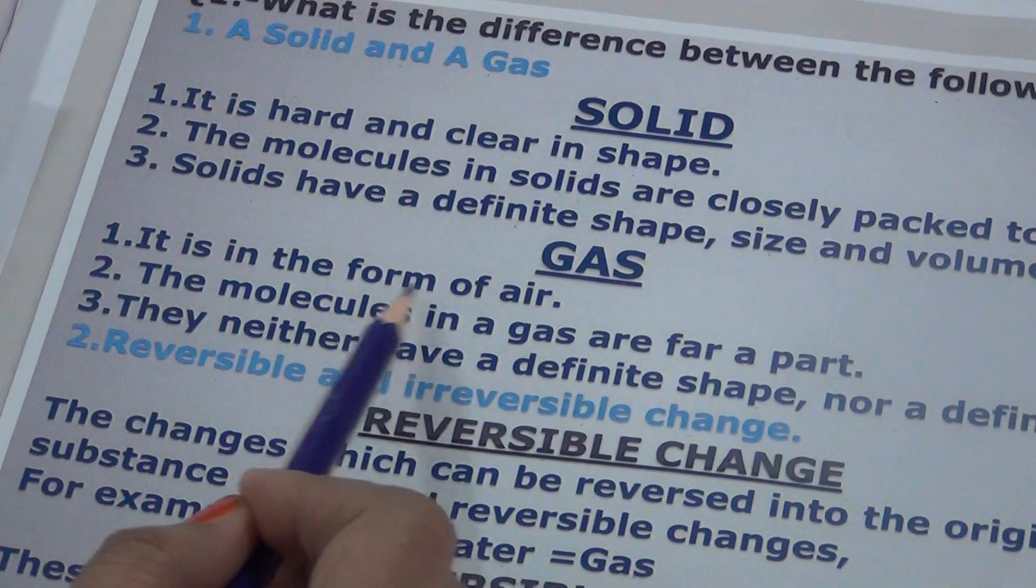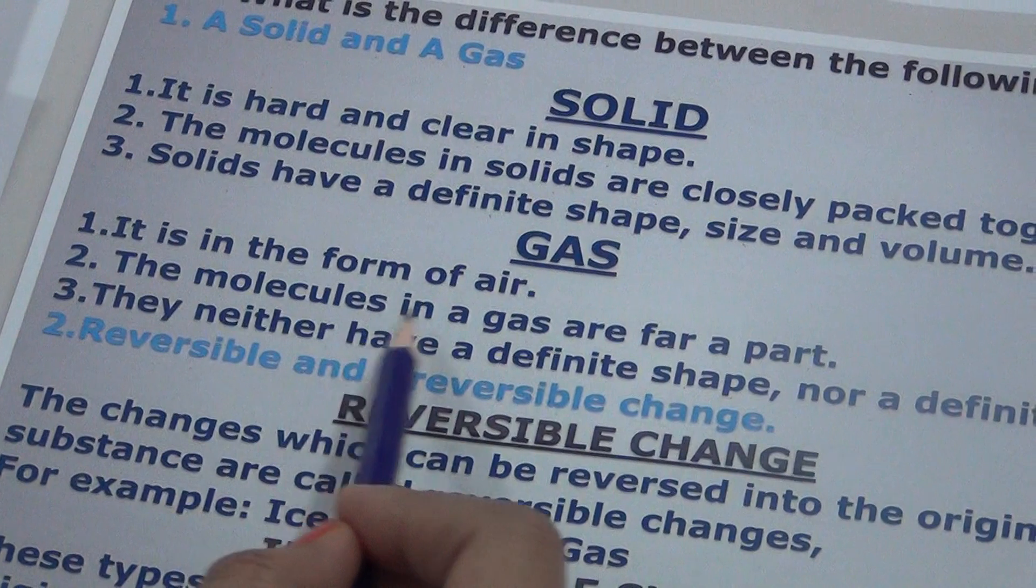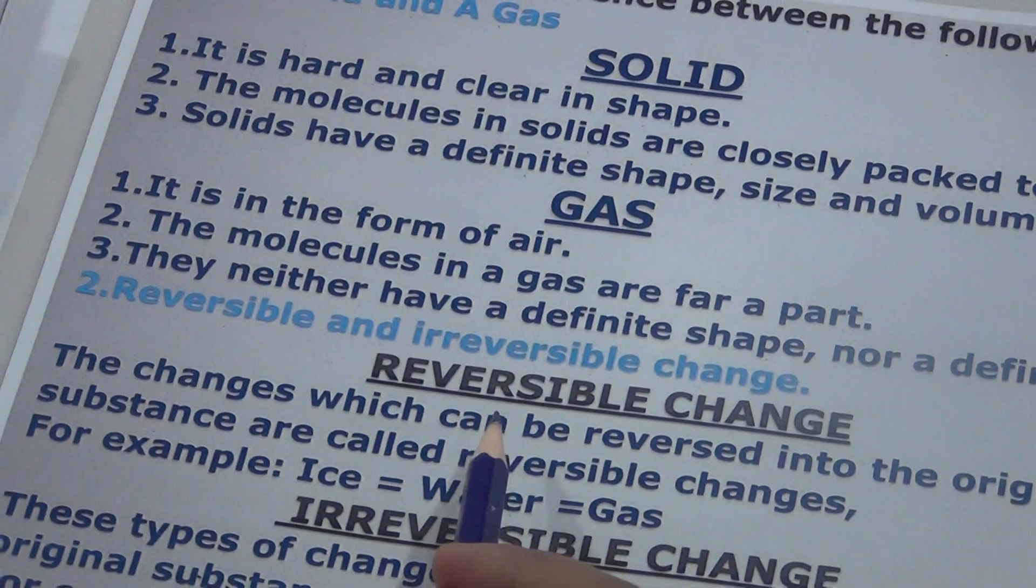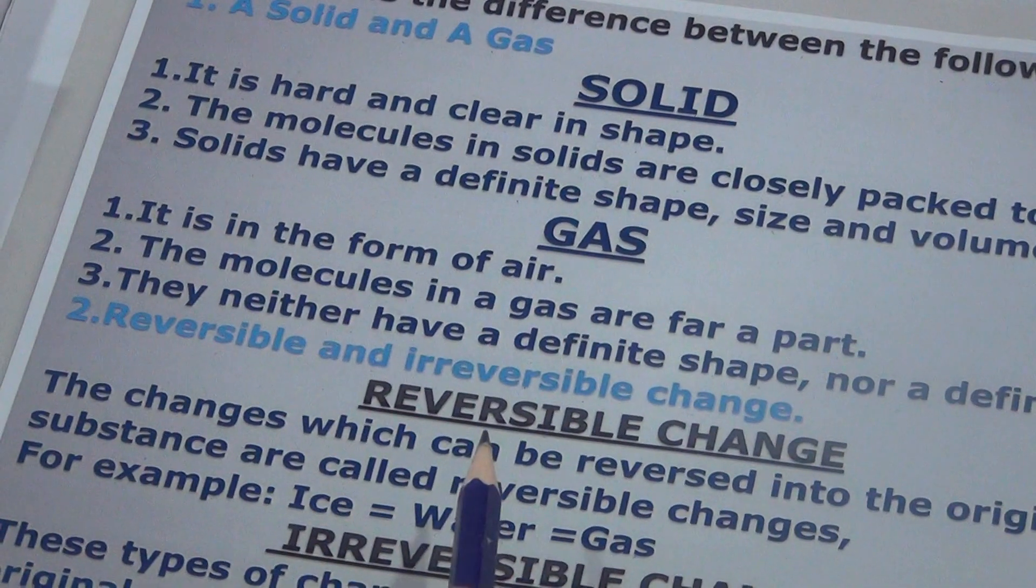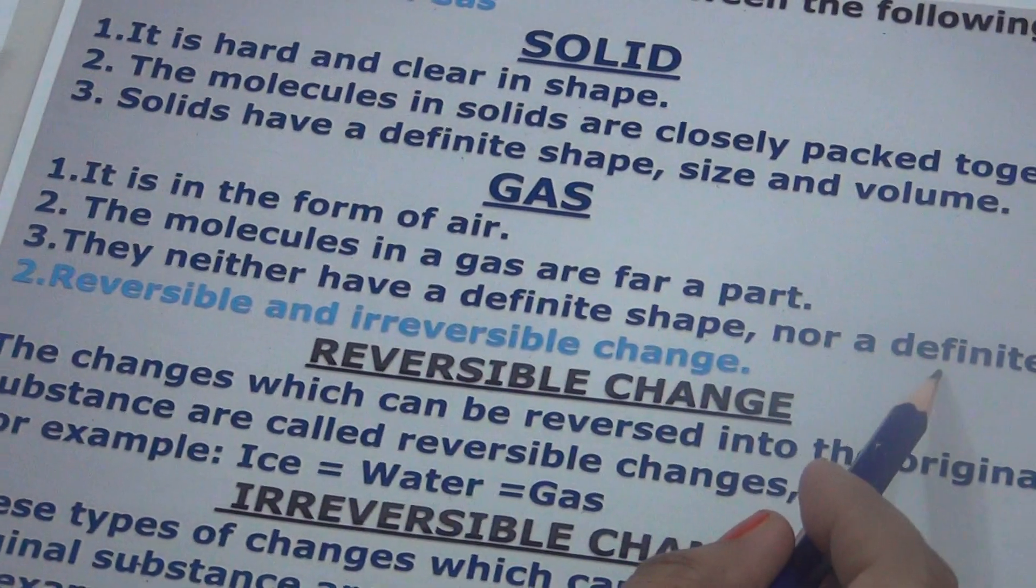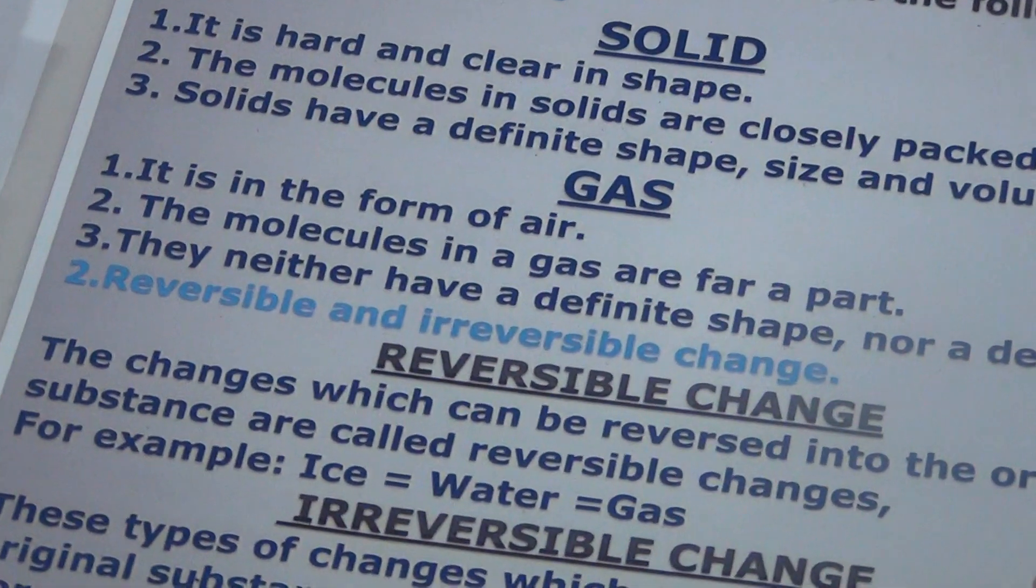Gas: it is in the form of air. The molecules in a gas are far apart. They neither have a definite shape nor a definite volume.